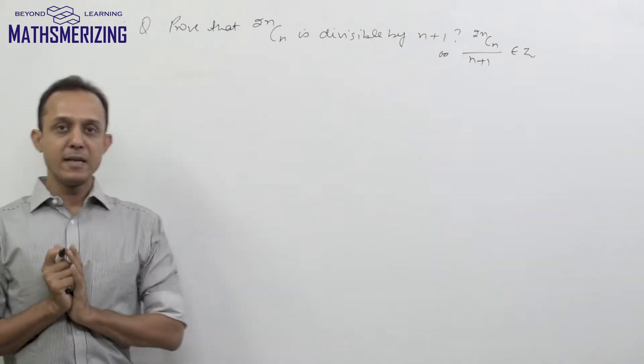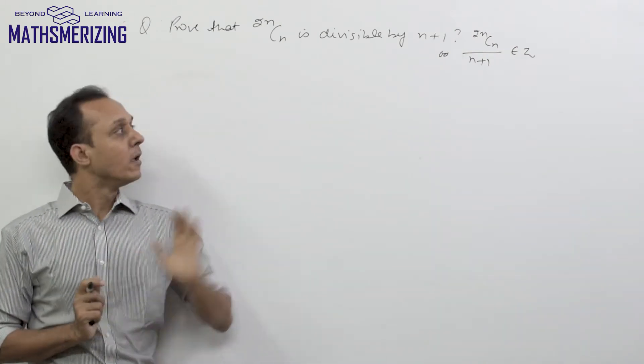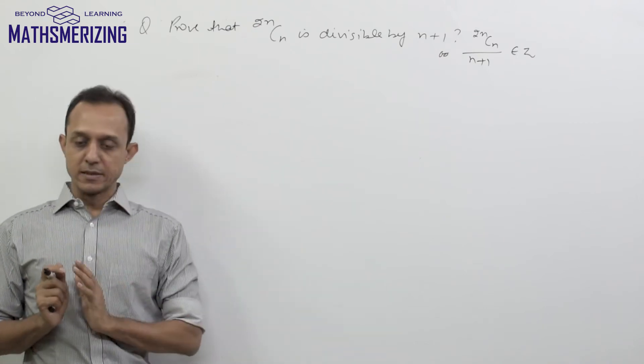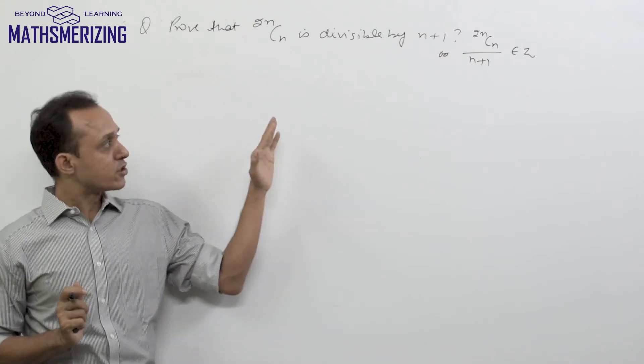Prove that 2nCn is divisible by n+1, or 2nCn/(n+1) is an integer. Now in order to solve this question,